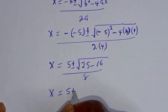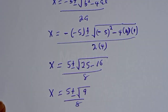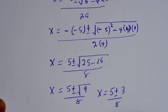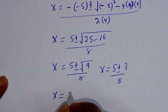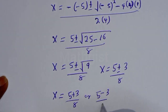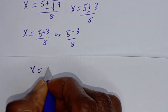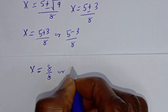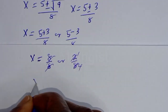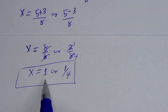Then s is equal to 5 plus or minus square root of 9, over 8. That is 5 plus or minus 3 over 8. So s is equal to 1 or s is equal to 1 over 4. This is the final answer. Thank you, bye.